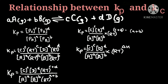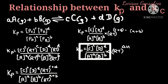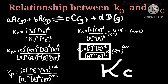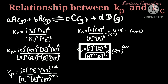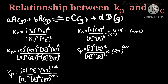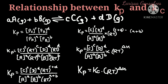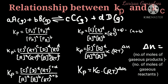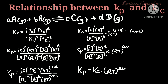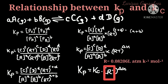The term ([C]^c [D]^d) / ([A]^a [B]^b) is nothing but KC, our equilibrium constant. Substituting KC, we get the final relationship: KP equals KC times (RT) raised to ΔN. Here ΔN is the difference between the number of moles of gaseous products minus the number of moles of gaseous reactants. R is the gas constant with a value of 0.08206 litre atmosphere per kelvin per mole.